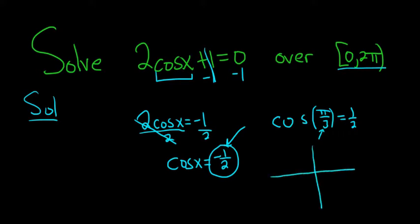Cosine on the unit circle is the x-coordinate. So those angles have to be multiples of pi over 3, and they have to be here and here. The reason they're here is because cosine is negative here, and this is negative.